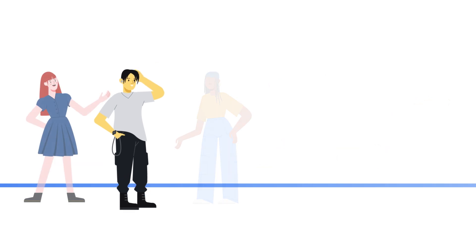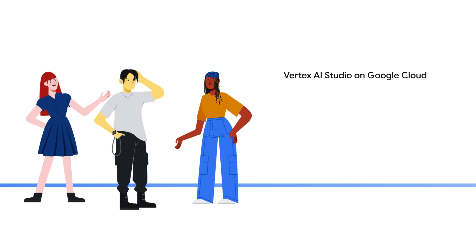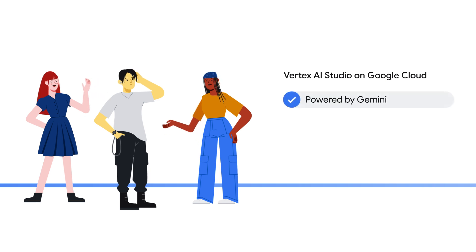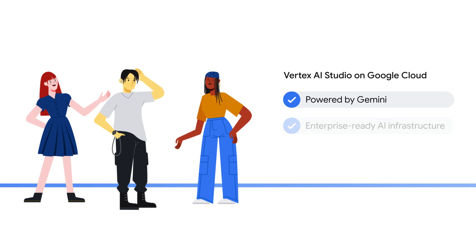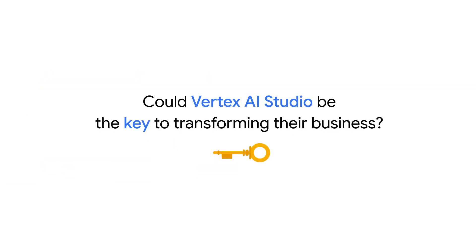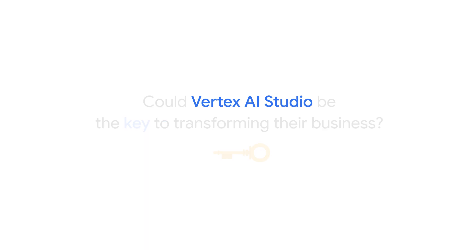They've all heard how Vertex AI Studio on Google Cloud is powered by Google's advanced Gen AI models like Gemini, and has an enterprise-ready AI infrastructure. Could Vertex AI Studio be the key to transforming their business?